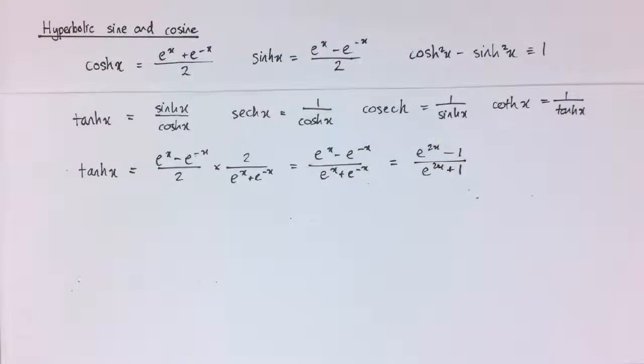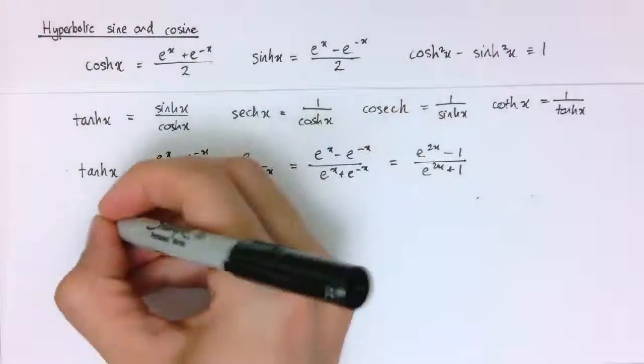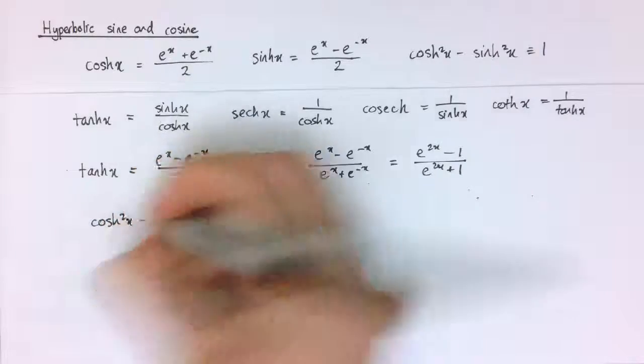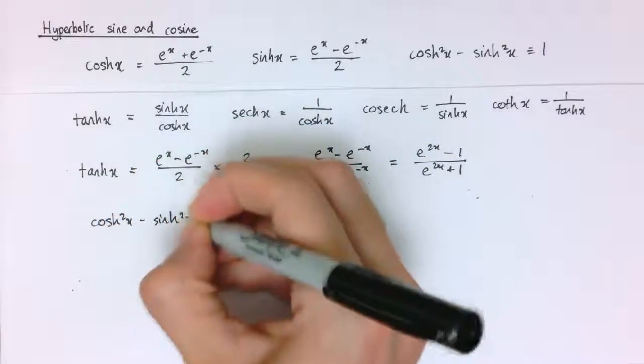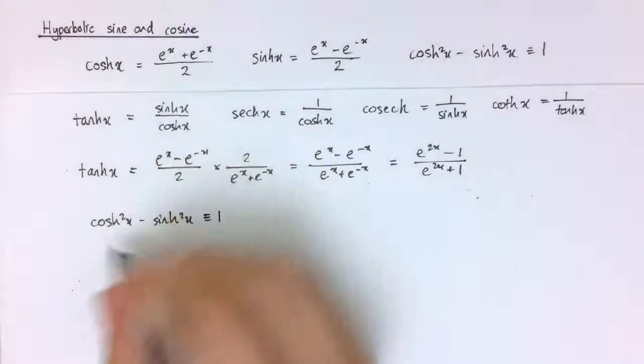That can be quite a useful form for the hyperbolic tan. And now we've got these, we can generate some further identities as well, the same as when you did it for ordinary sine and cosine. For example, we can take that identity cosh squared x minus sinh squared x is 1, and I could divide that through by cosh squared x.